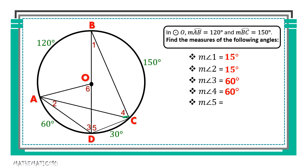Next is angle 5. Angle 5 is the same as angle BDC. The intercepted arc of angle 5 or angle BDC is arc BC, which is 150 degrees. Since angle 5 is an inscribed angle, we apply the inscribed angle theorem. To get the measure of angle 5, simply take half of the measure of its intercepted arc, which is 150 degrees. Half of 150 is 75 degrees.